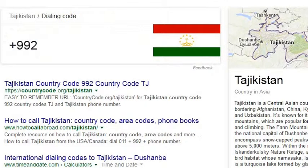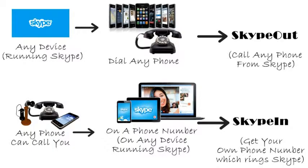So 992 is the country code for Tajikistan. I don't recommend calling Tajikistan directly from a landline, as your phone company will charge you a lot of money. If you want to call, I really recommend using Skype — we detail how to make free and low-cost calls using Skype in other videos.